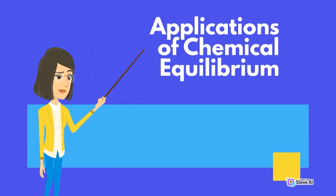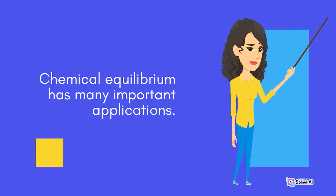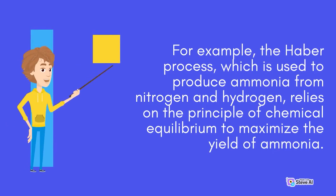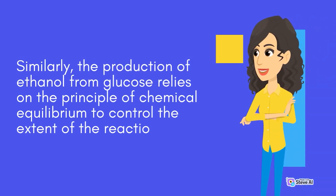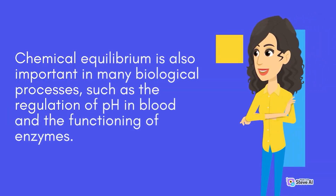Chemical equilibrium has many important applications. For example, the Haber process, which is used to produce ammonia from nitrogen and hydrogen, relies on the principle of chemical equilibrium to maximize the yield of ammonia. Similarly, the production of ethanol from glucose relies on the principle of chemical equilibrium to control the extent of the reaction. Chemical equilibrium is also important in many biological processes, such as the regulation of pH in blood and the functioning of enzymes.